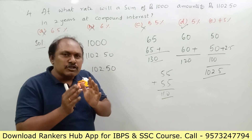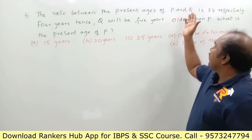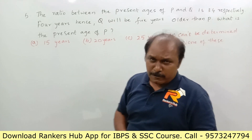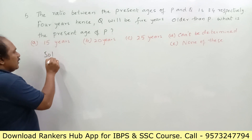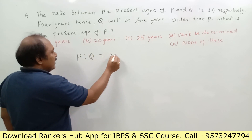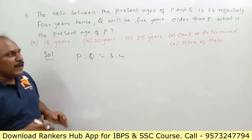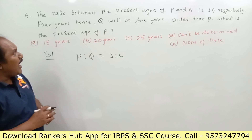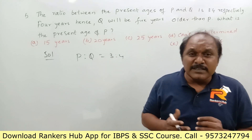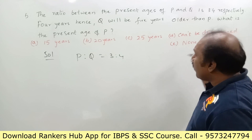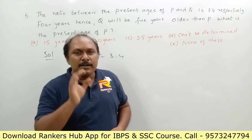Let us see the fifth question. The ratio between the present ages of P and Q is 3 is to 4. Four years hence, Q will be 5 years older than P. What is the present age of P? You need not require a pen to answer this question — we can tell the answer orally.